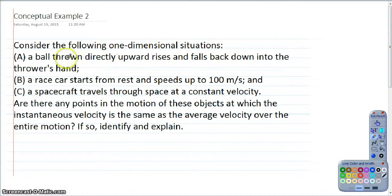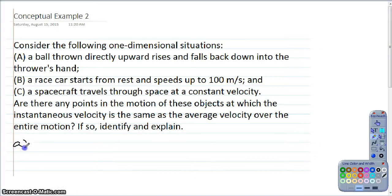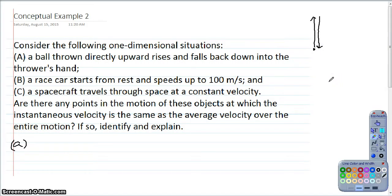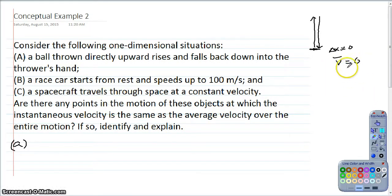Consider each of the following situations — one-dimensional motion. A: a ball is thrown directly upward, rises, and falls back down into the thrower's hand. Are there any points where the instantaneous velocity equals the average velocity for the entire motion? For situation A, if I throw a ball straight up and it comes back down, the average velocity is zero because total displacement is zero — it returns to the exact same position.